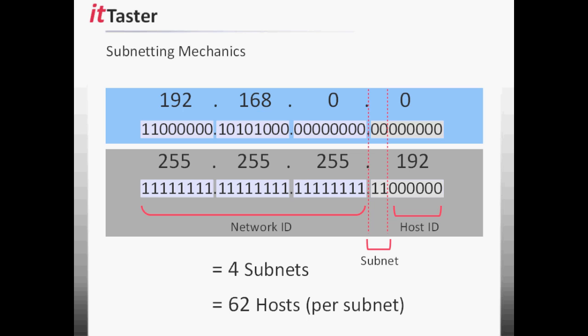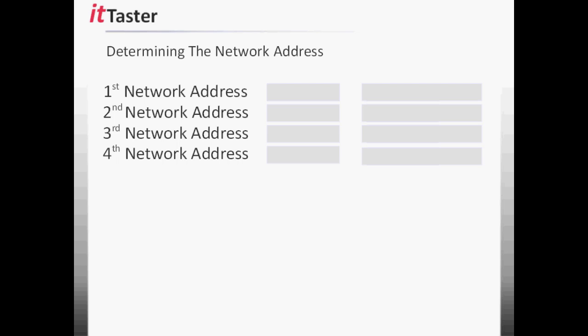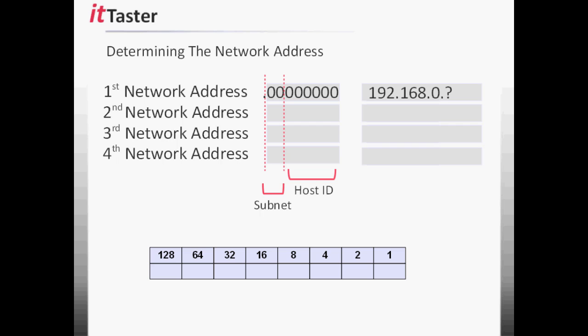So we have 4 subnets and 62 hosts per subnet. Now that we've worked out the number of subnets and the number of hosts, there are some important addresses we need to establish. The first thing I'm going to do is determine the network address of each of the 4 subnets, and this is done by examining the first 2 bits of the 4th octet — the 2 bits we borrowed from the host ID to create our subnets — and then converting them to dotted decimal notation.